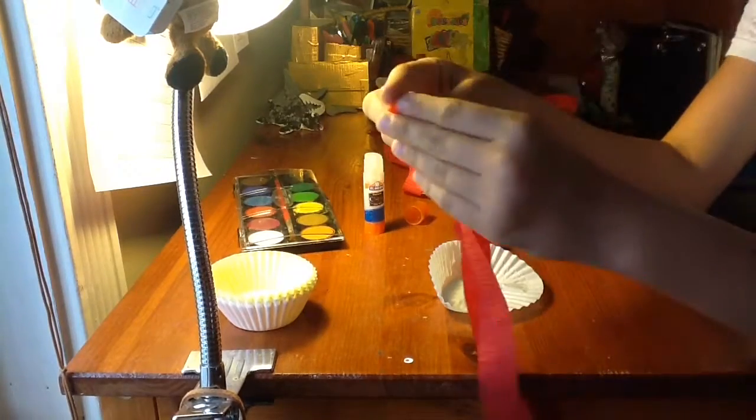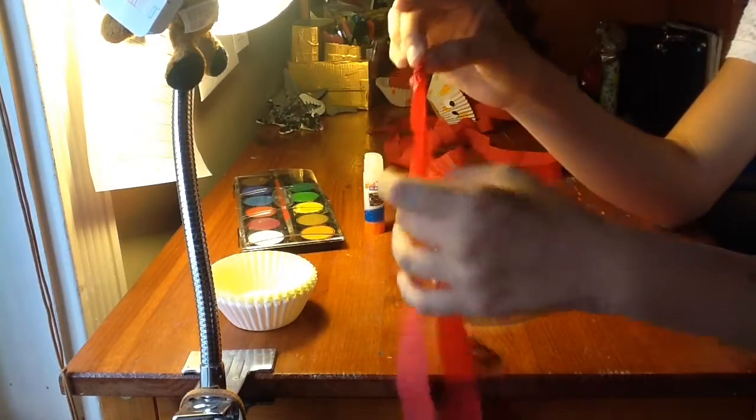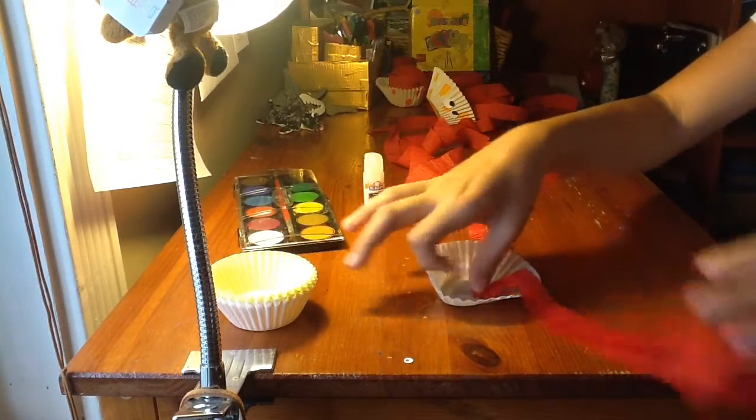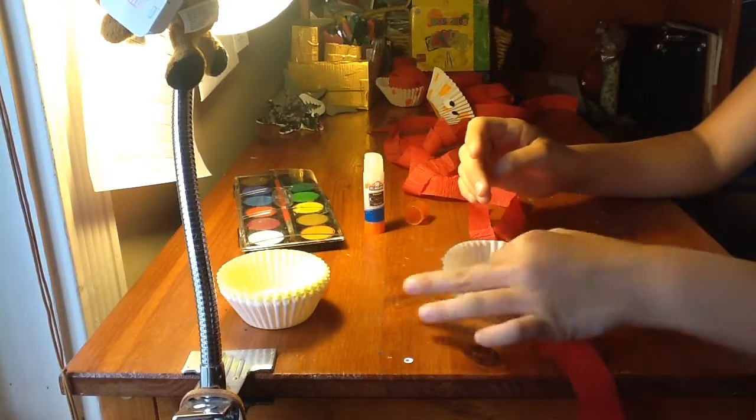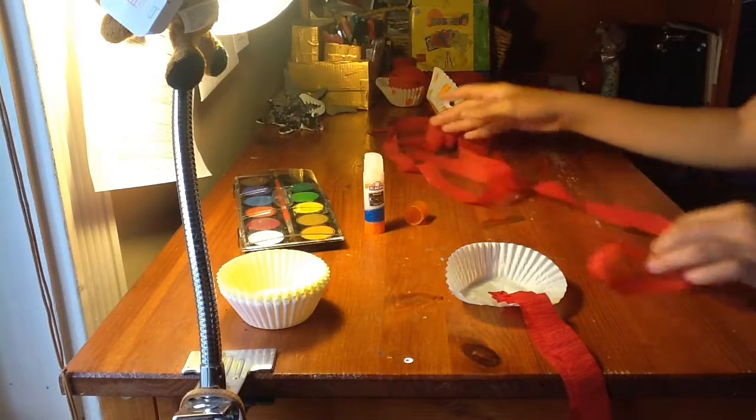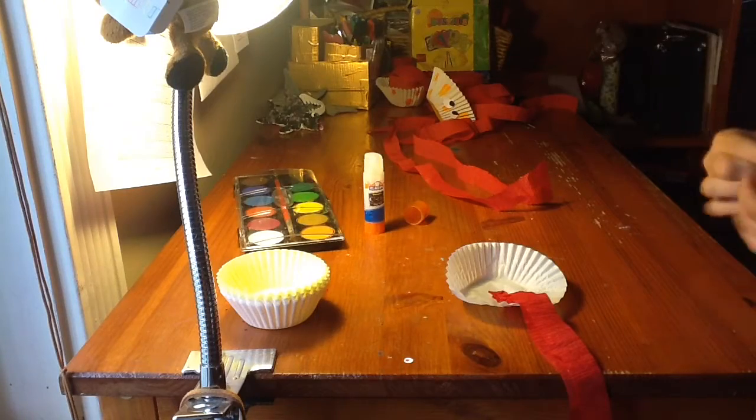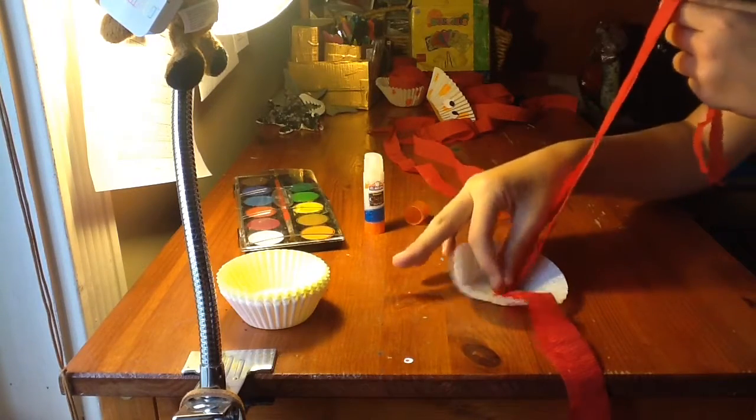Then, you will have to crunch it up. Just make it a little, it should look like this. Crunch it up and place it inside, inside the glue. Then, you will take the next streamer. Do the same thing and put it in a different corner though this time. So, like right here.